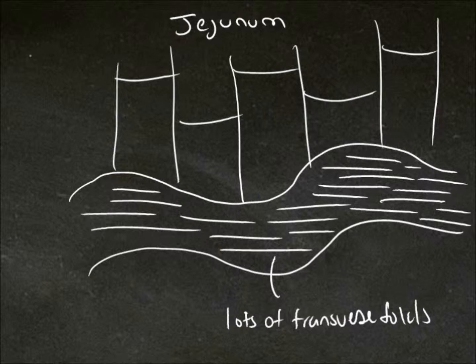Up here is the mesentery. And we can see that it has long vasorecta and very few arcades.